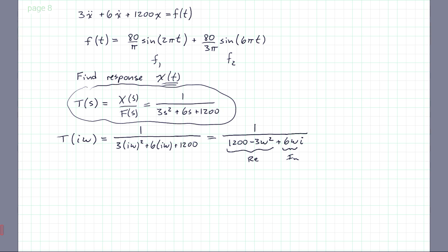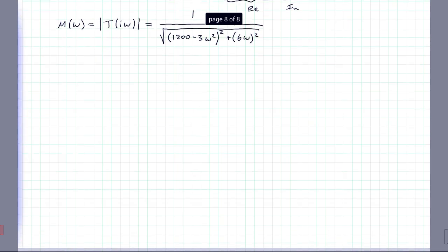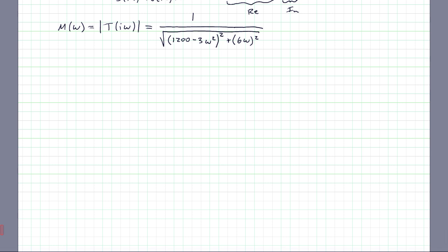So to find the magnitude ratio, which is the next step, the magnitude ratio is a function of frequency. You will simply take the amplitude of this frequency transfer function. And that will be the amplitude of the numerator, which is 1, and the amplitude of the denominator, which is the square root of the sum of the squares of the real part and the imaginary part. So (1200 - 3ω²)² plus (6ω)². You can already see how much fun this is going to be. So here's your magnitude ratio.